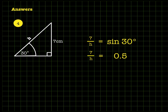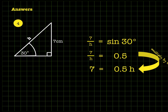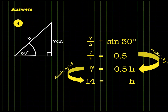This takes an extra algebraic step because h is on the bottom of the fraction. We multiply both sides by h to get 7 equals 0.5h — the fraction clears and we multiply the right-hand side by h as well to keep the equation balanced. Then we divide both sides by 0.5 to get h on its own. Seven divided by 0.5 is 14, so the hypotenuse h is 14 centimeters.